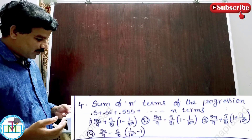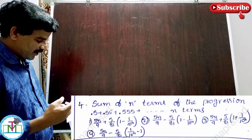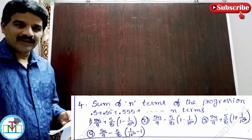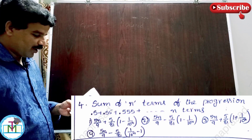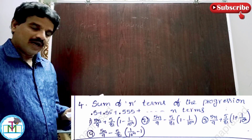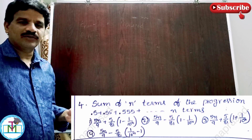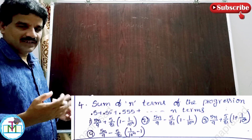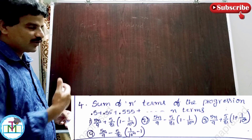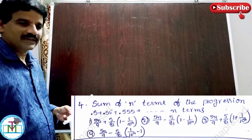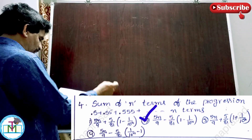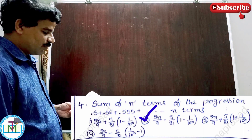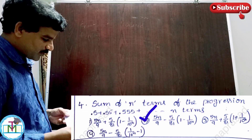Question number 4 (labeled 5): the sum of n terms of the progression 0.5 plus 0.55 plus 0.555 plus so on up to n terms. These are standard problems from 10th class mathematics. You must remember the standard formulas because in a competitive exam you need to answer within one minute. The answer is option 2: 5n by 9 minus 5 by 81 into (1 minus 1 by 10 to the power n).